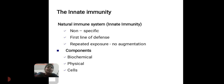The innate immunity is also known as the natural immune system. It is non-specific. It is present since birth and is inherited from mother to child through the placenta. It is not specific to any foreign bodies. Components of innate immunity include biochemical, physical, and cellular components.